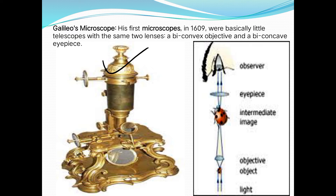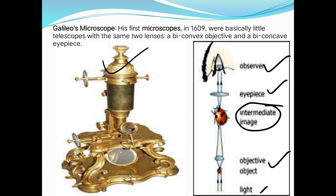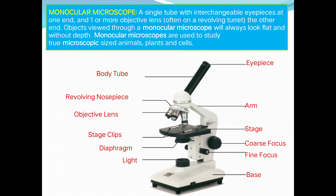The first microscope was invented by Galileo in 1609. It was basically a little telescope using two lenses — a biconvex objective and a biconcave eyepiece. The observer looks through the eyepiece, then there is an intermediate image, then the objective lens, with light focused at the bottom.